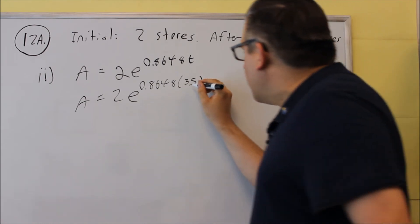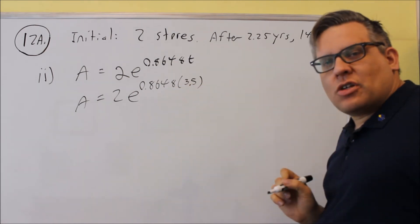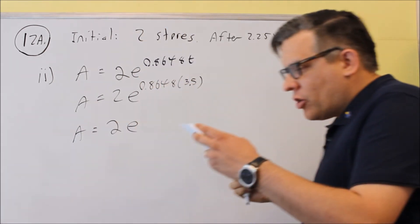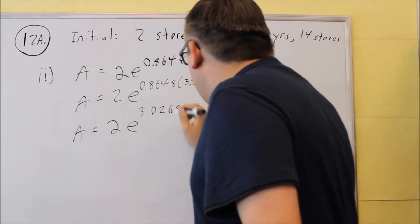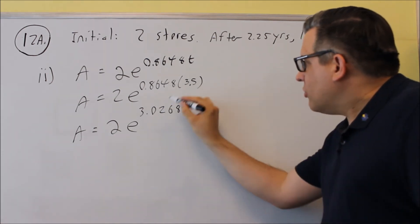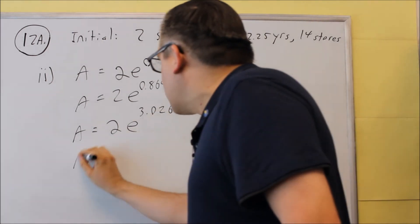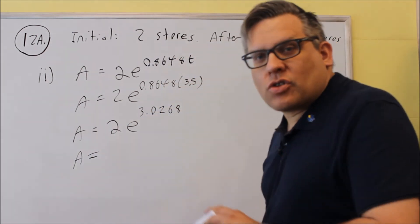So we're going to put this into the calculator. We're going to do this part first, 3.5 times the k value. And if we do that step first, we're going to get 3.0268 when we multiply these two together. And then once we do that, we're going to put the whole thing into the calculator to get the final answer. Now this one says round to the nearest whole number.